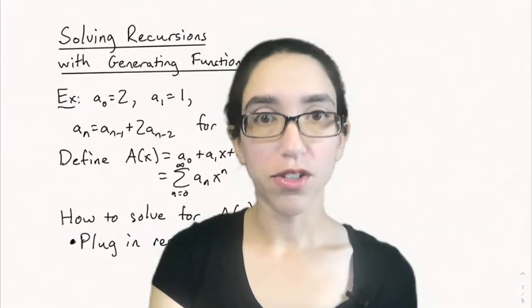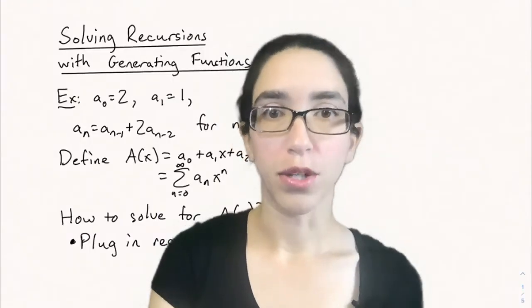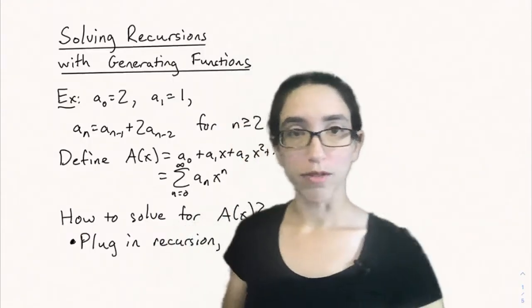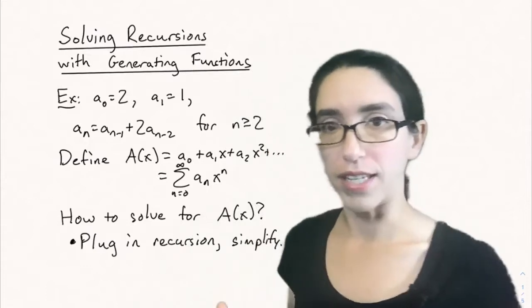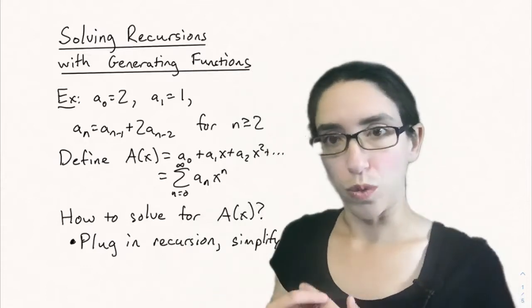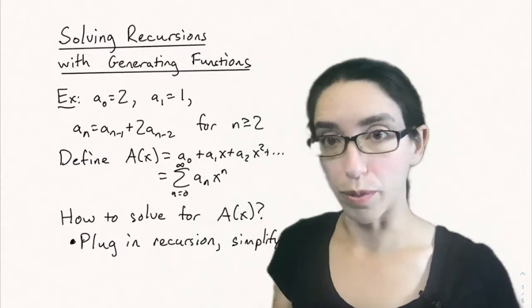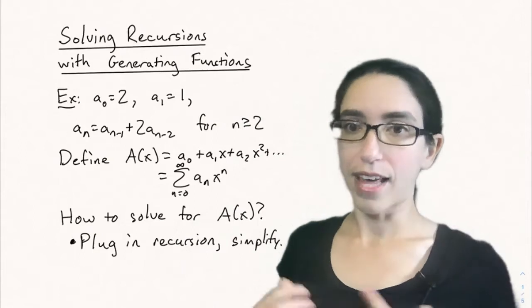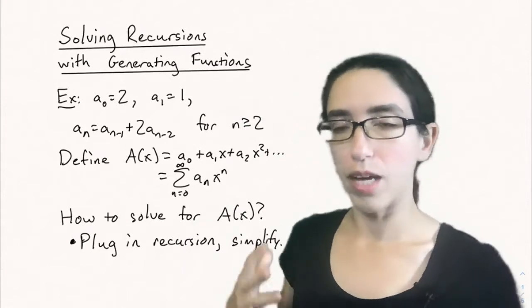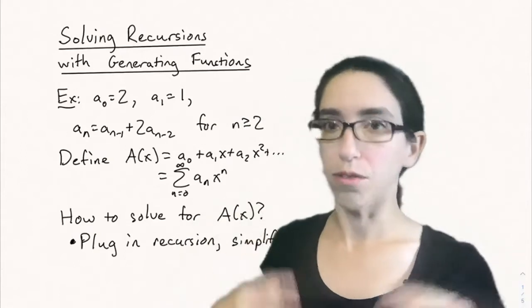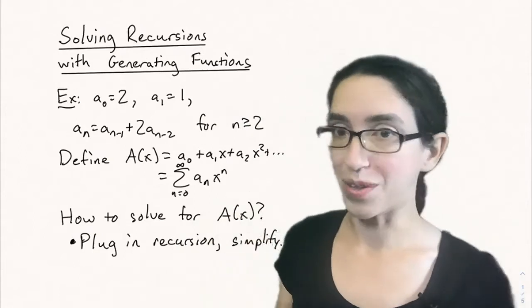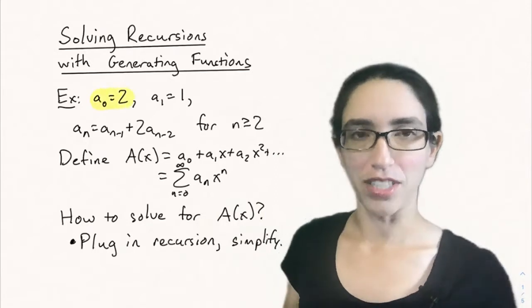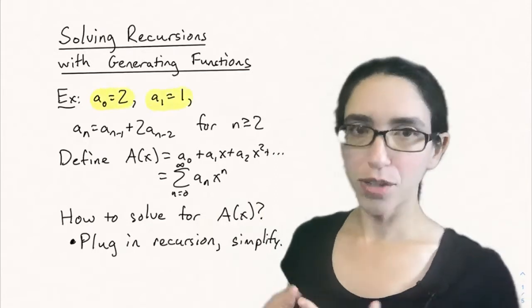Hello and welcome back to Math 301 Combinatorics at CSU. Today we're going to be talking about solving recursions using generating functions. If you have a recursively defined sequence, the question is: is there a closed formula for its generating function? And can that closed formula help us find an explicit formula for the nth term of the sequence? We'll see how that works today. Let's start with an example.